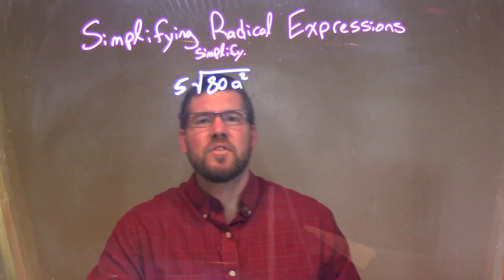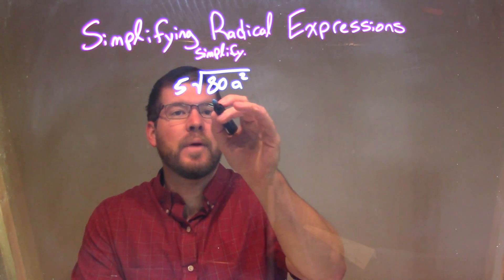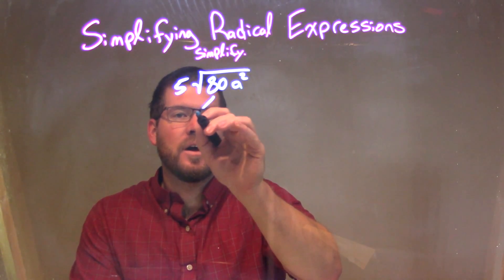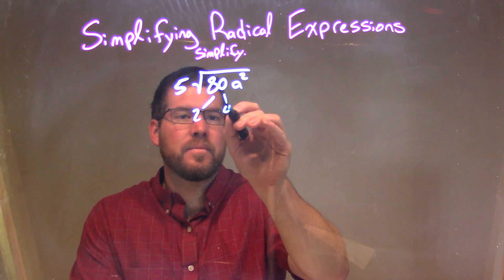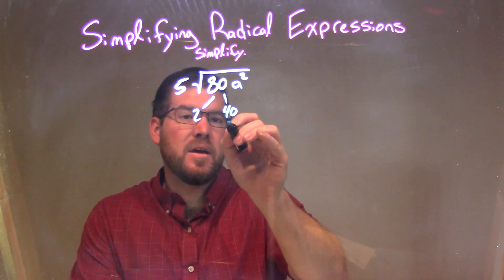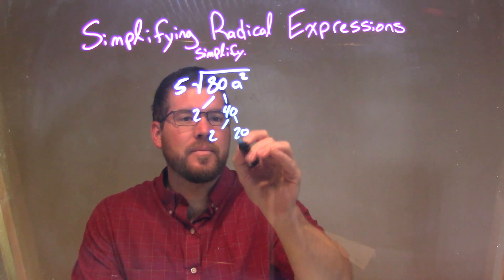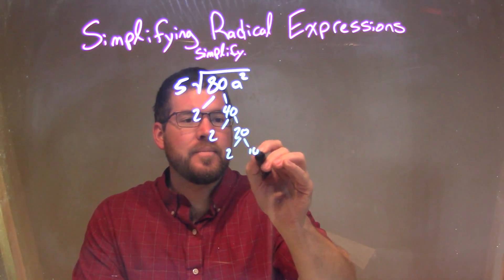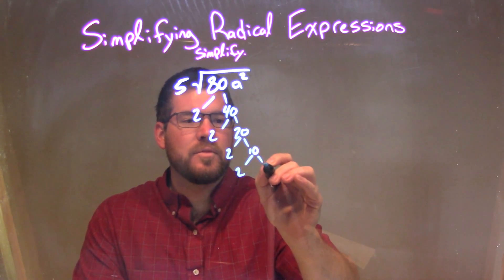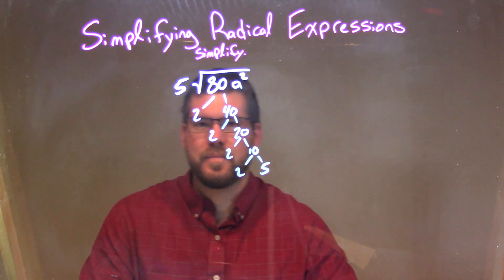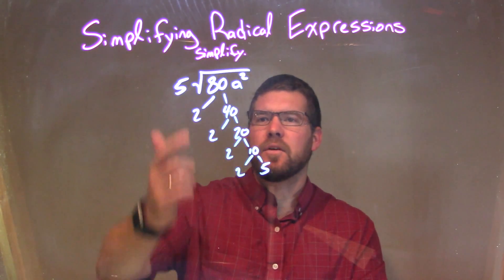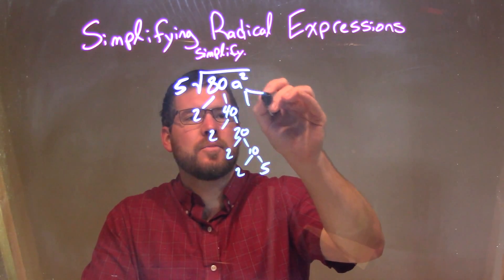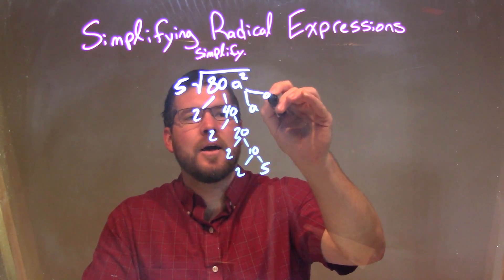The first thing I want to do is see how I can break down 80. Well, 80 is 2 times 40, and 40 is just 2 times 20. 20 is 2 times 10, and 10 is just 2 times 5. So I've done a prime factorization of 80. And a squared just breaks down to be a times a.